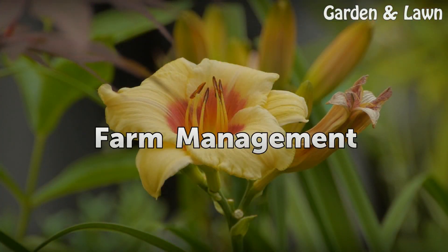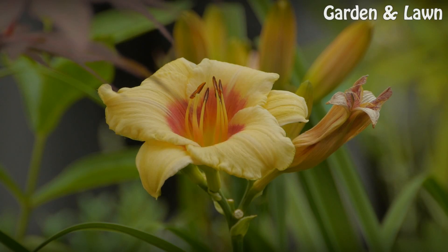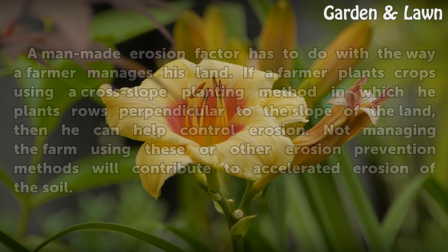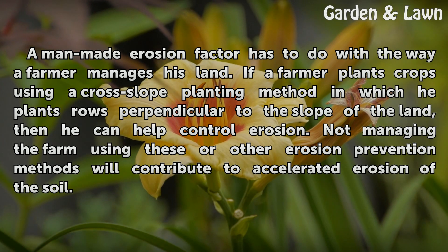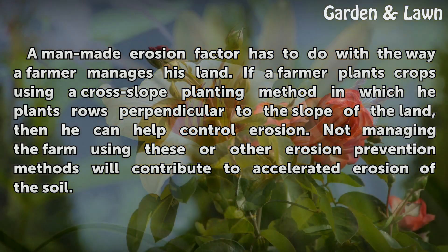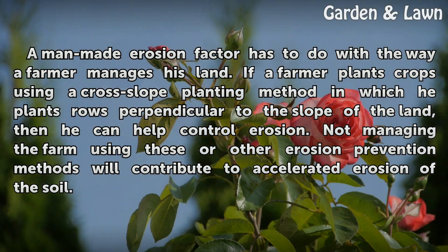Farm Management. A man-made erosion factor has to do with the way a farmer manages his land. If a farmer plants crops using a cross-slope planting method, in which he plants rows perpendicular to the slope of the land, then he can help control erosion. Not managing the farm using these or other erosion prevention methods will contribute to accelerated erosion of the soil.